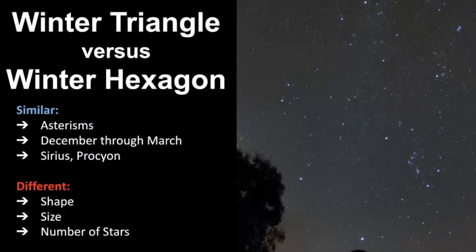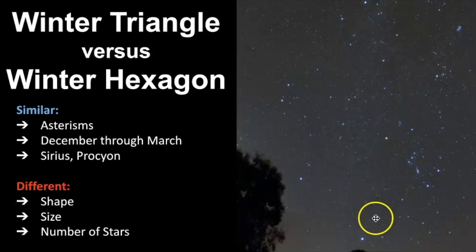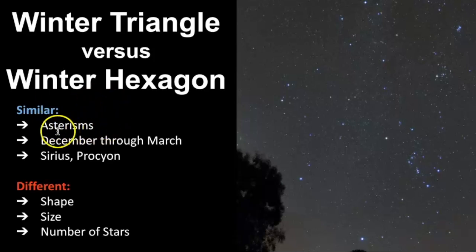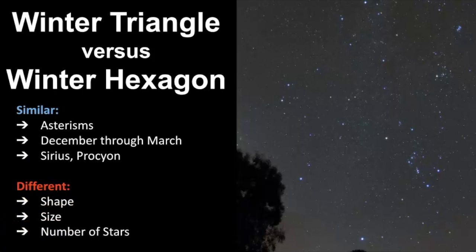I hope this video was helpful for understanding the differences between the winter triangle and the winter hexagon. They both have similar purposes; it's just a matter of whether you can see them. For me, the triangle is easier because I don't always have a wide enough view to see the entire hexagon — it depends on where I'm viewing from and what time of night I go out. They're both asterisms visible from December through March, sharing two stars in common, but their shape, size, and number of stars differ.